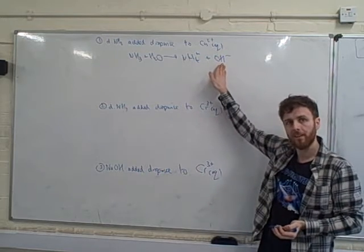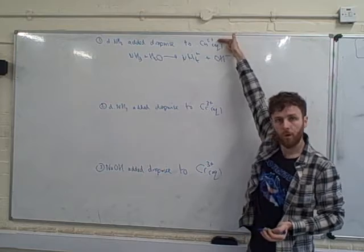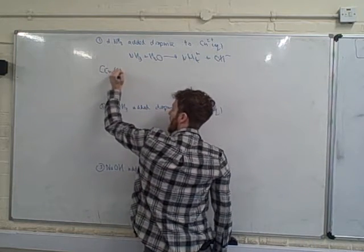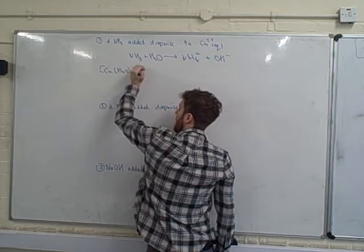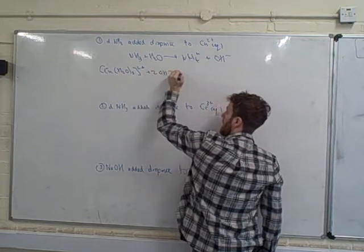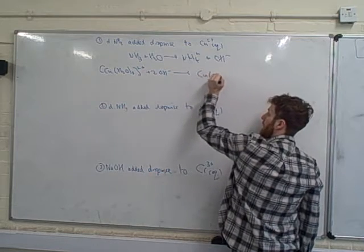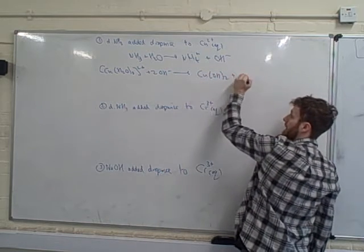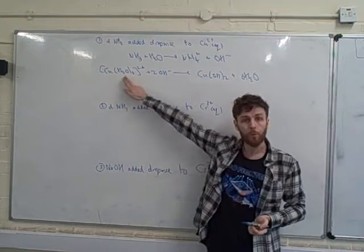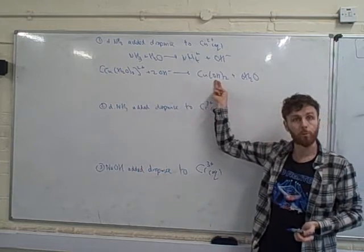And it's this hydroxide that then reacts with the copper. So we're then going to have our hexa aqua copper. We react with two of those hydroxides to form copper hydroxide. And don't forget, the six waters have been released. So we will go from a blue solution to a blue precipitate.